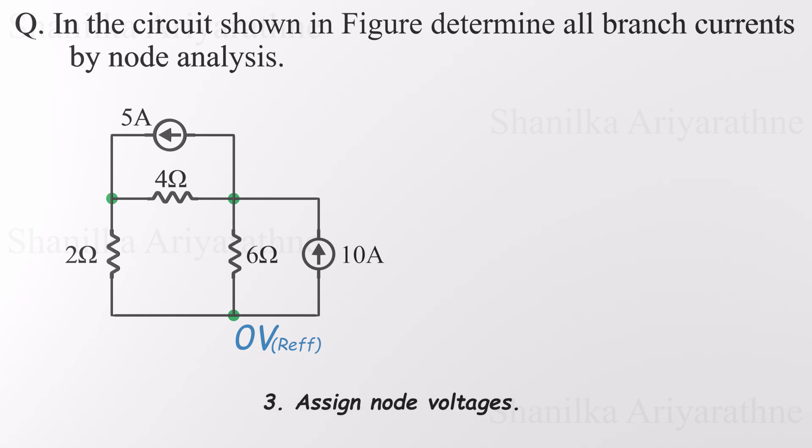The next step is to assign voltages to the nodes. If there were any voltage sources directly connected to the reference node, we'd label those voltages first. But in this circuit, we don't have any voltage sources. So instead, we label the remaining node voltages ourselves. Let's call this one V1 and the other V2. With all the node voltages labeled, we're ready to keep going.